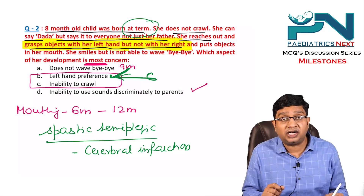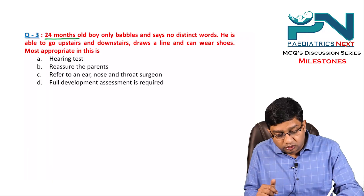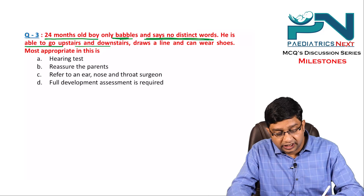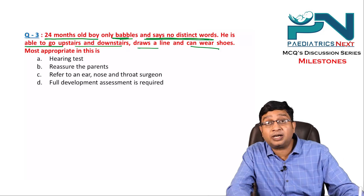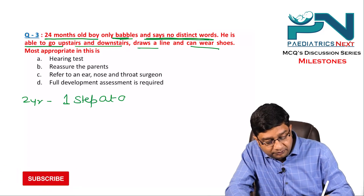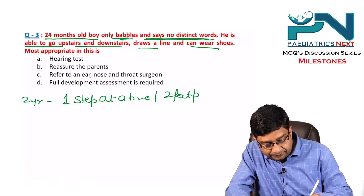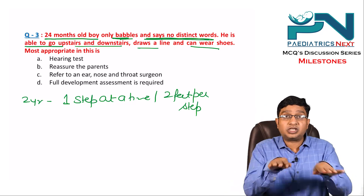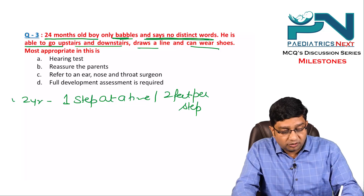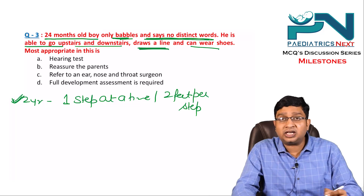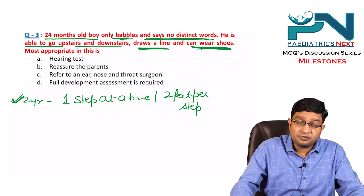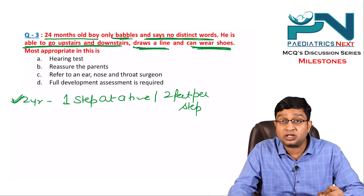Question 3: A 24-month-old child only babbles and says no distinct words — speech is not developed. He can go upstairs and downstairs, draws a line, and can wear shoes. At two years, a child goes upstairs and downstairs one step at a time, or two feet per step, which is normal. Drawing a line and wearing shoes at two years are also normal. So both fine motor and gross motor are normal.